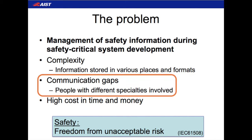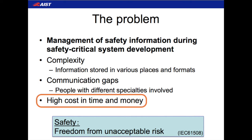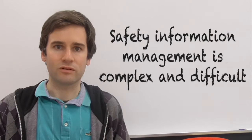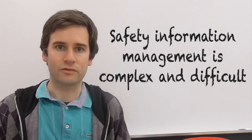There are also communication problems between the people managing the information. For example, this information is communicated during meetings or in textual reports, which is very time consuming and ambiguous. And finally, these factors mean it is a large cost in terms of time and money to develop and maintain this information. This means that overall, safety information management is a very complex, difficult task.